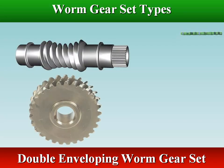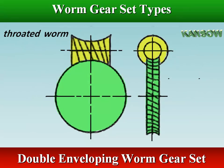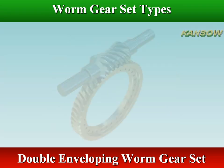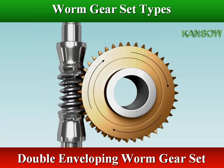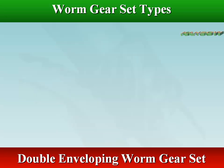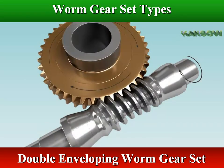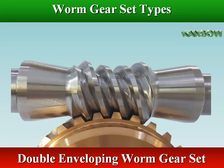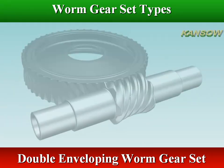In a double-enveloping worm gear set, the worm is also throated so as to wrap part way around a throat gear — sometimes called a cone or hourglass — with concave teeth on both the worm screw and the gear itself. Double-enveloping worm gearing comprises enveloping worms mated with fully enveloping worm gears, further increasing contact so this type can carry even larger loads than a single-enveloping worm gear set of the same size.